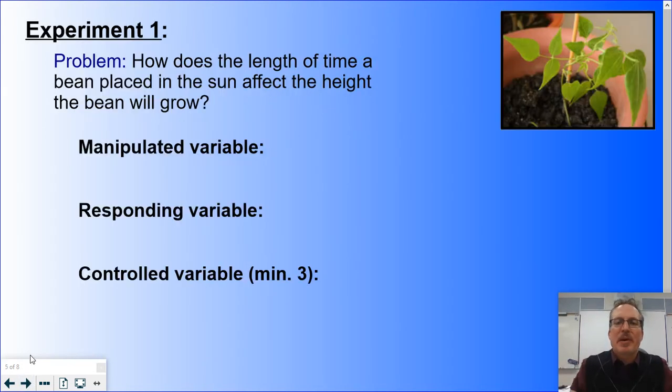Let's take a look at an experiment. The experiment we're going to do is we're going to have a series of different bean plants and we're going to see how does the length of time a bean seed is placed in the sun affect the height the bean will grow. We're intentionally going to change the length of time the bean is placed in the sun, which means that is going to be my manipulated variable.